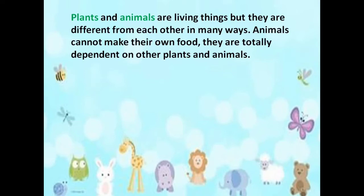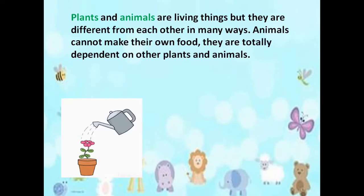So I read here, children — just pay attention. Plants and animals are living things but they are different from each other in many ways. In the last lesson we learnt how plants can make their own food — they need water to grow, they need sunlight and they need air.